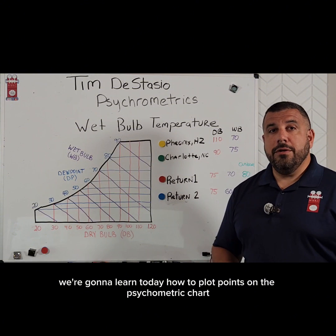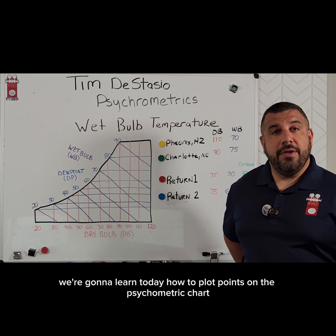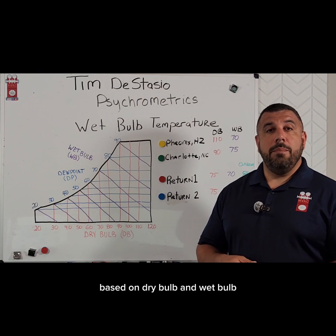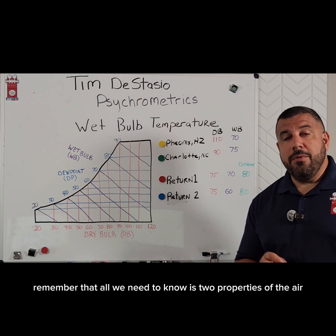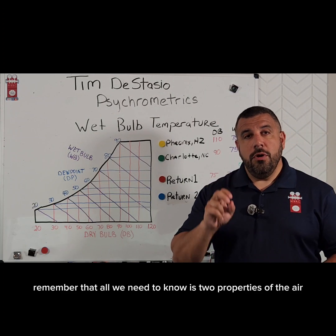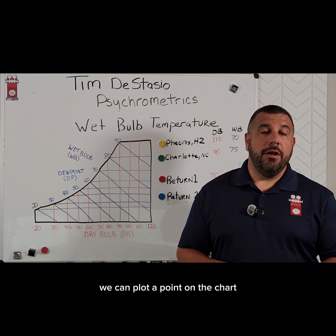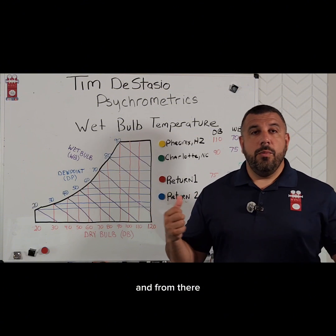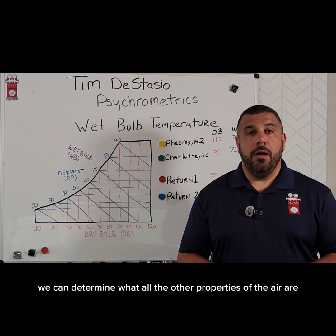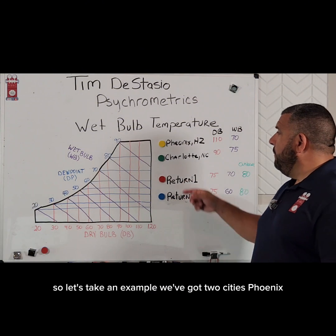We're going to learn today how to plot points on the psychrometric chart based on dry bulb and wet bulb. Remember that all we need to know is two properties of the air to plot a point on the chart, and from there we can determine all the other properties of the air. So let's take an example.